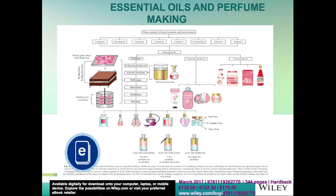Many perfumes, colognes, and eau de toilettes are available in markets, which can be differentiated from each other on the basis of their fragrance and duration — how long they can be smelled. It is the ratio of ethyl alcohol and perfume oil which determines whether it is a cologne, an eau de toilette, or a perfume. Generally, perfumes are more concentrated than colognes or toilettes. Perfumes available in markets come with three notes: top notes, middle notes, and base notes.